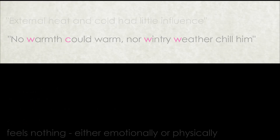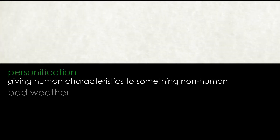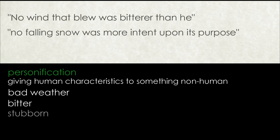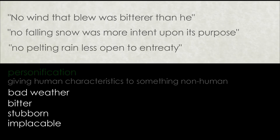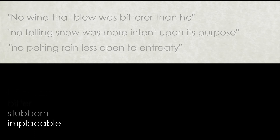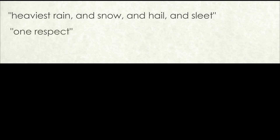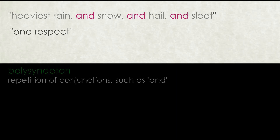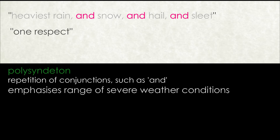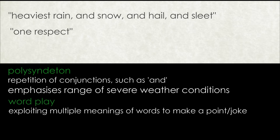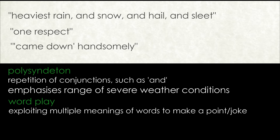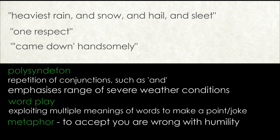Dickens continues to illuminate Scrooge's character by personifying qualities of bad weather and comparing him to them. He is depicted as bitterer than the wind, more stubborn than falling snow, and as implacable as the pelting rain. At the end of the first paragraph, Dickens reveals that the heaviest rain and snow and hail and sleet only gets the better of him in one respect — note the use of polysyndeton in this image to stress the range of severe weather conditions. Dickens also uses wordplay in the double meaning of 'came down handsomely,' which not only means to literally fall from the sky in plentiful amounts, but also means metaphorically to accept with humility that you are wrong, to ironically portray how haughty and dogmatic Scrooge is.